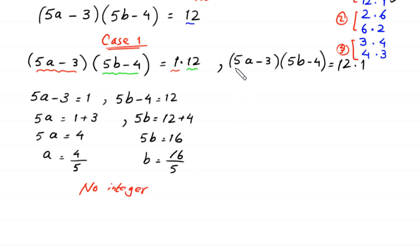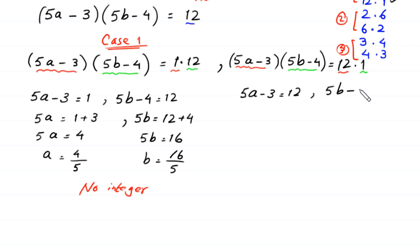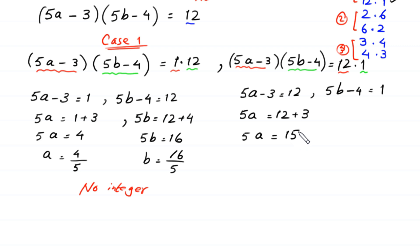Now we try the other arrangement: 5A minus 3 equal to 12 and 5B minus 4 equal to 1. So 5A equals 15 and A equals 3. And 5B equals 5, so B equals 1. The value of A plus B is equal to 3 plus 1 equals 4.